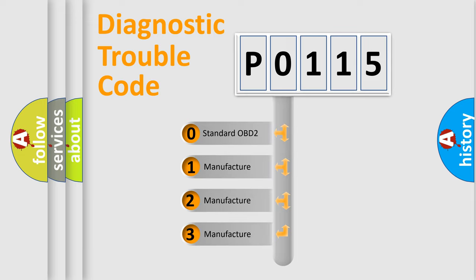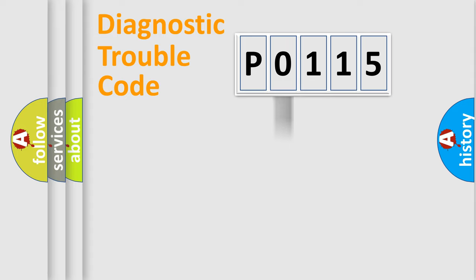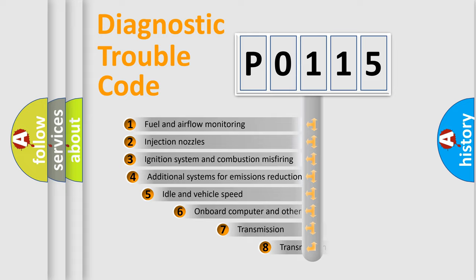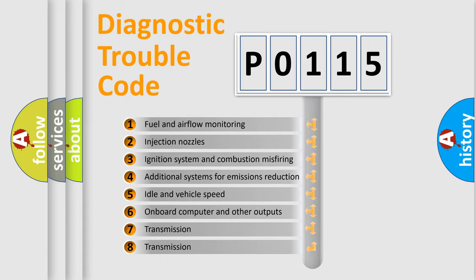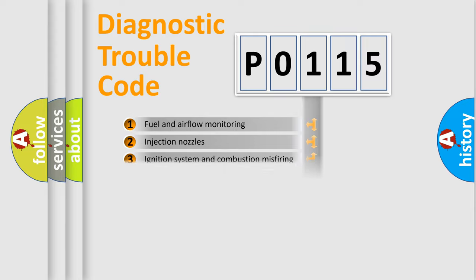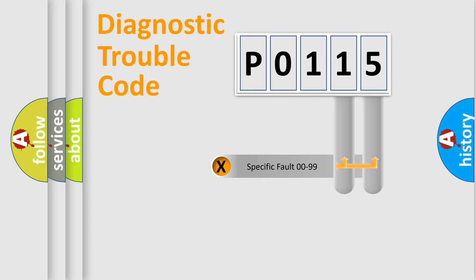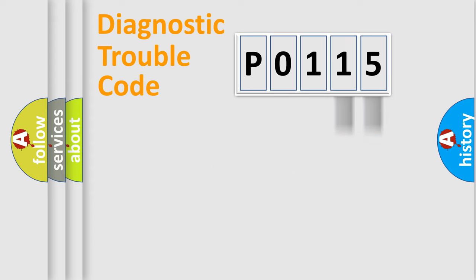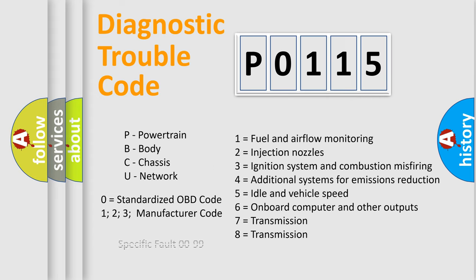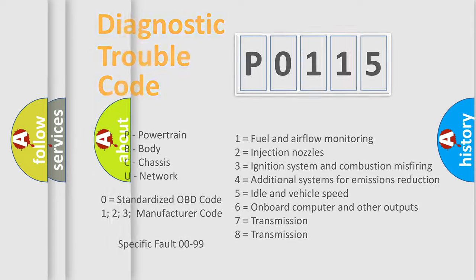If the second character is expressed as zero, it is a standardized error. In the case of numbers 1, 2, or 3, it is a more manufacturer-specific expression of a car-specific error. The third character specifies a subset of errors. This distribution is valid only for the standardized DTC code, and only the last two characters define the specific fault of the group.